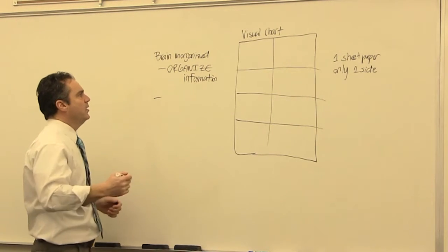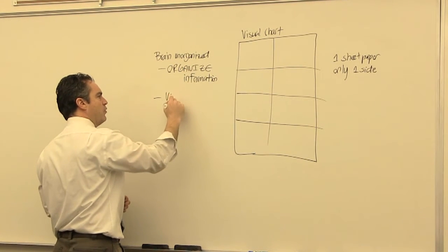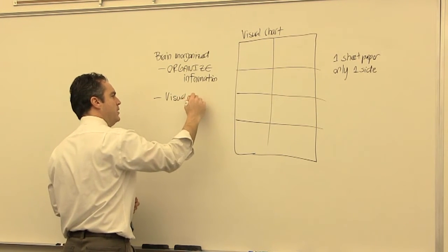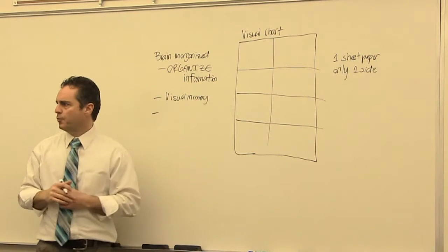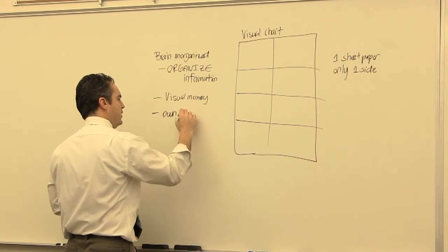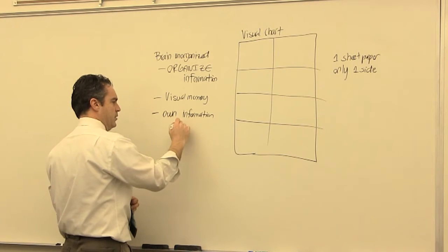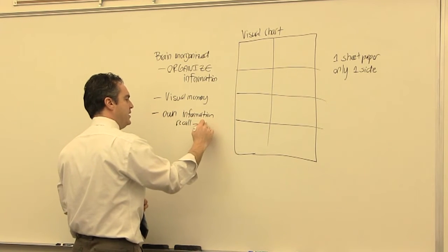Really important. So first of all we are organizing our brain. Second of all is we are creating a visual memory. And then the third principle is that we want to own this information and be able to recall it in our time of need.